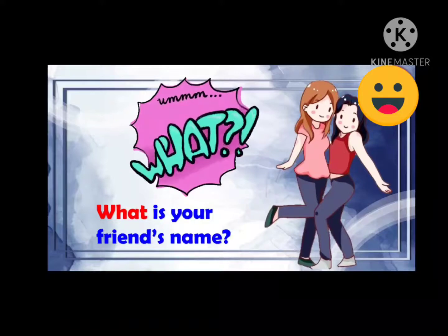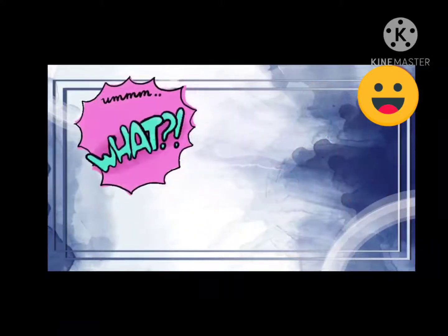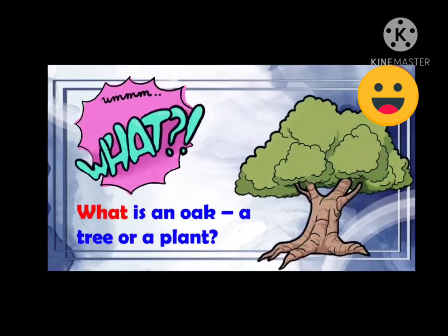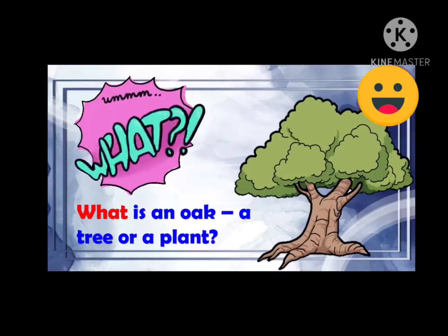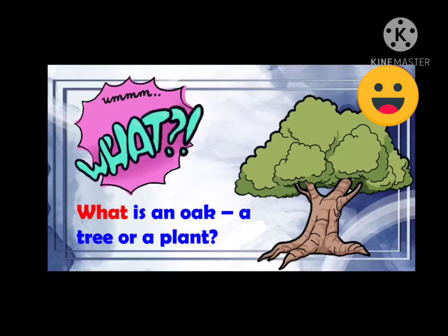Let us take a look at the following example: What is an oak, a tree or a plant? In this sentence, the interrogative pronoun what has been used to ask a question about an object — a non-living thing, an oak tree. So, what is used to ask questions in order to get information. Always remember, what is used to ask a question about people or objects.